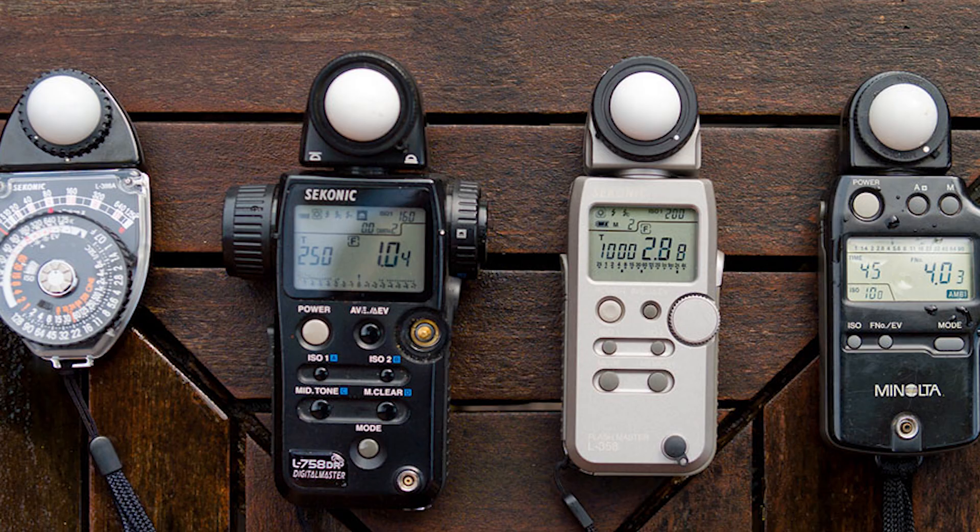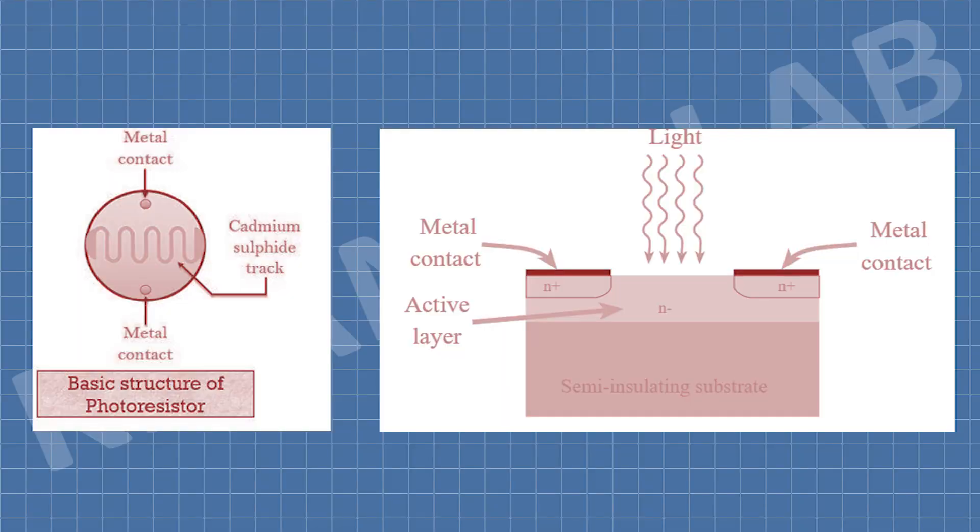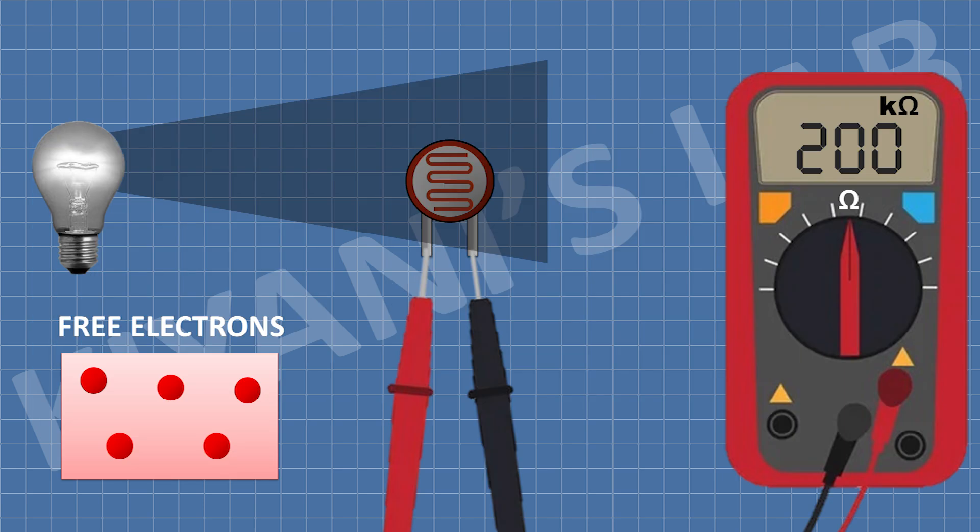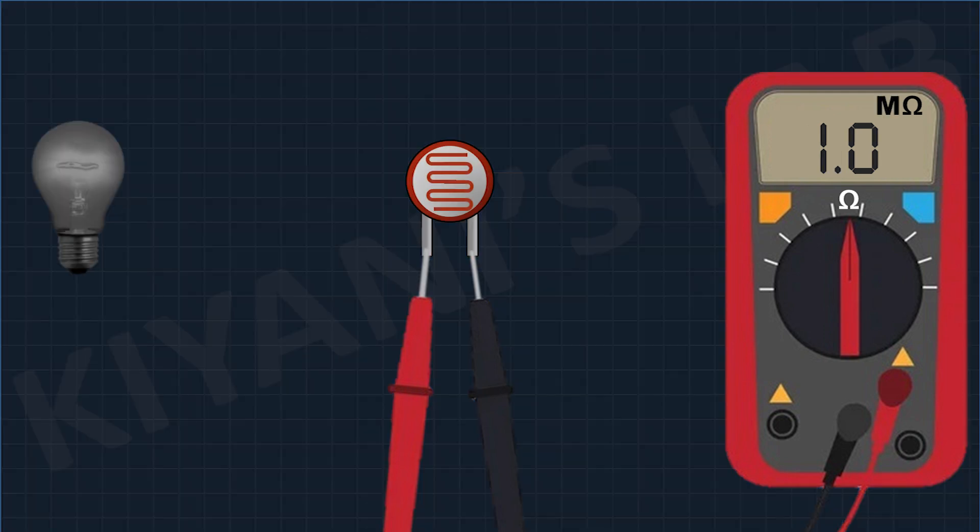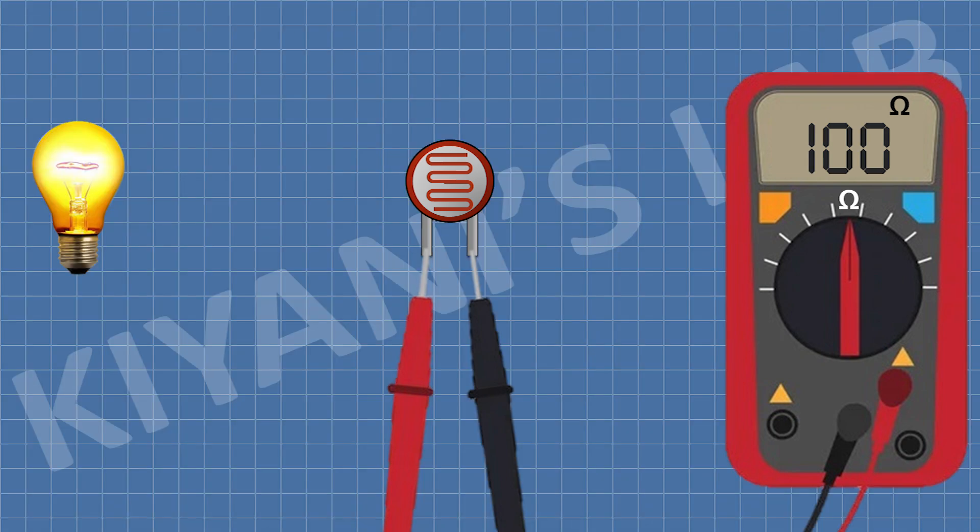Here's how it works. LDRs are made of semiconductor materials like cadmium sulfide. When light photons hit the surface of the LDR, they provide energy to electrons in the material. This increases the number of free electrons which reduces the resistance. The resistance can vary dramatically. In the dark, it could be in the megaohm range, while under bright light it might drop to just a few hundred ohms.